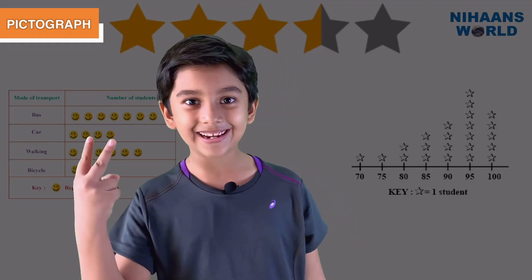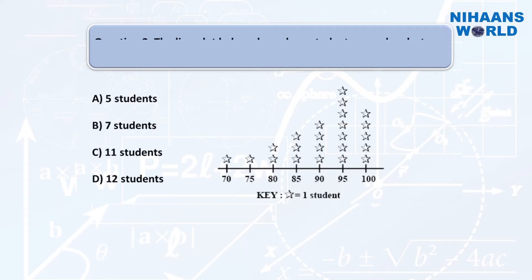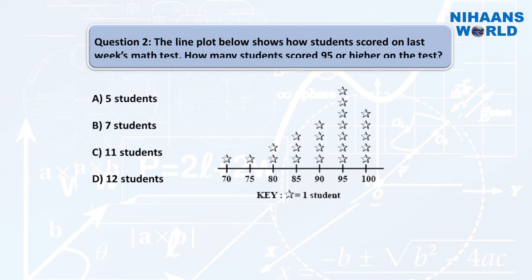Let's see the second example. The line plot below shows how students scored on last week's math test. How many students scored 95 or higher on the test? One star represents one student.